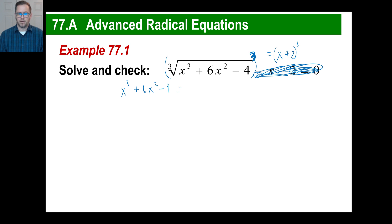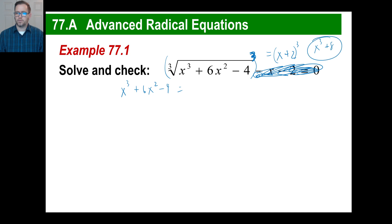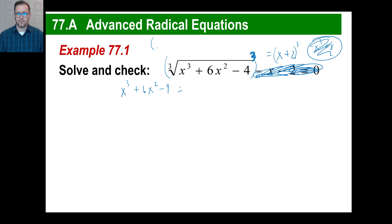Just copy it. Over here on the right side is a different story. Make sure you do not just go, 'oh, that'll be x cubed plus 2 cubed, which is 8.' No — you're missing an entire middle. Those will only be the first and last terms. We're going to have to actually do the multiplication: x plus 2 times x plus 2 times x plus 2.